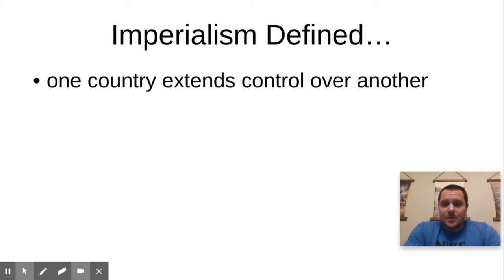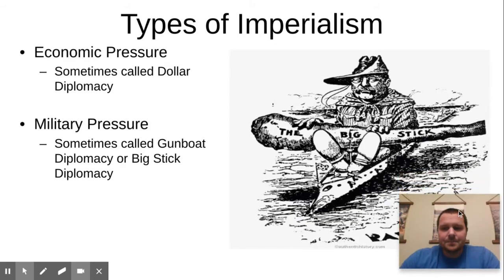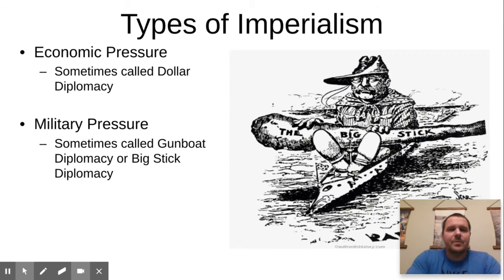That doesn't always make it right. Sometimes countries use their wealth or their military to extend control over another country in a way that maybe is unfair, or in a way that maybe hurts the people of that country they're taking over. We're going to look at a couple of examples of types of imperialism. The first type is economic imperialism — this is when a country uses its wealth to bully another country into doing what it wants. Sometimes this is called dollar diplomacy.